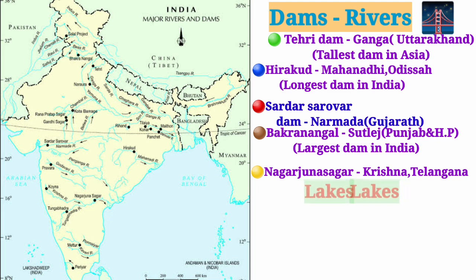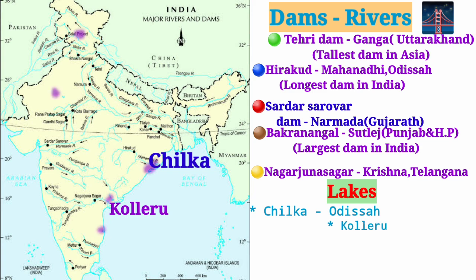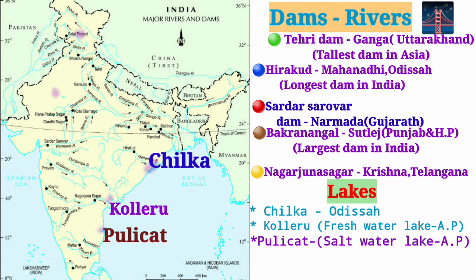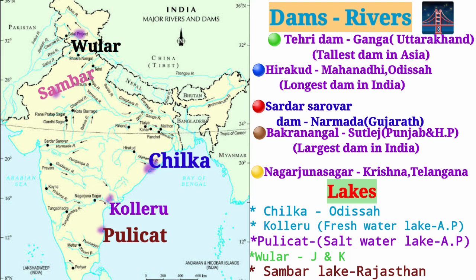Important lakes in India: Chilka Lake in Odisha. Kolleru Lake in Andhra Pradesh, in the district of East Godavari — a freshwater lake. Pulicat Lake in Andhra Pradesh, in the district of Nellore — a salt lake. Dal Lake in Kashmir — a freshwater lake. Sambhar Lake in Rajasthan — a saltwater lake.